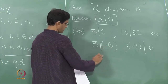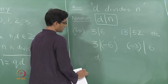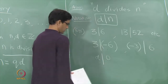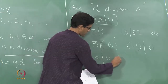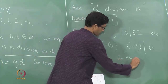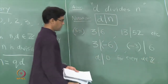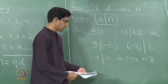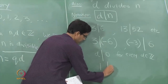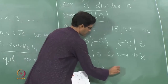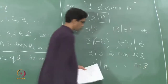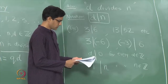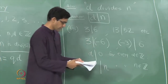Here are some border cases to keep in mind. No matter what d you pick, d always divides 0, for every d in Z, because 0 can always be written as d times 0. So 0 is a multiple of every number. Similarly, 1 divides every number n, for every n in Z, because n can be written as 1 times n.